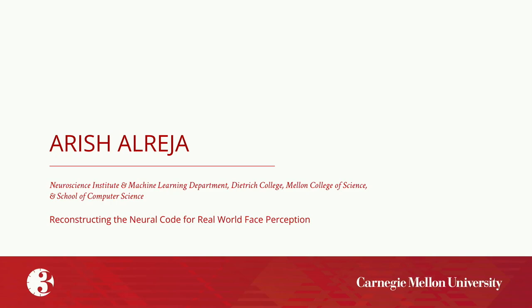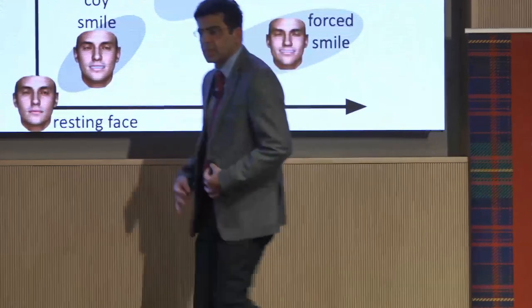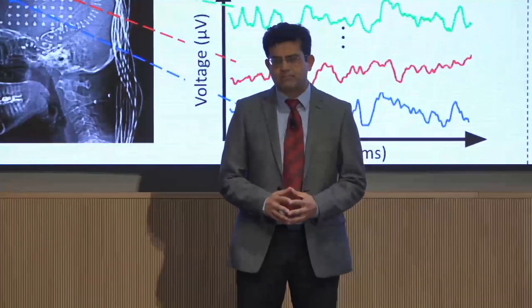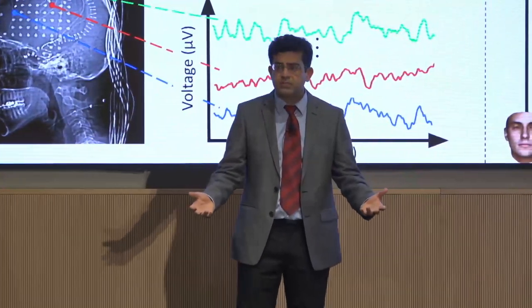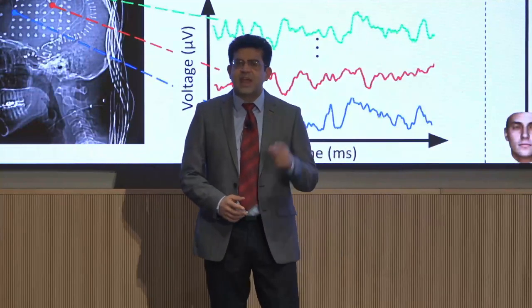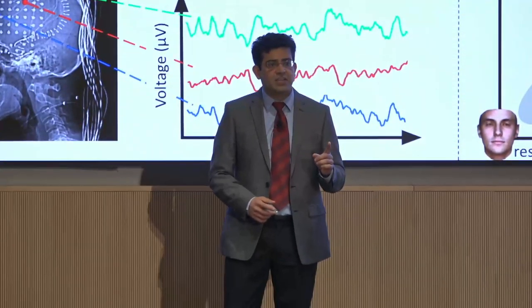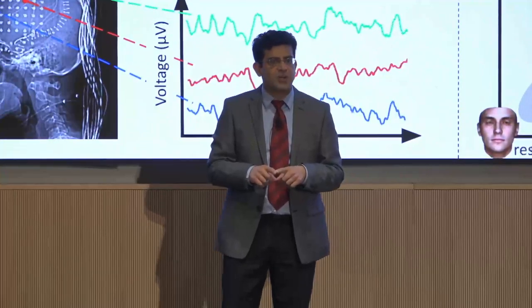Our third presenter is Arish El-Rejah, whose presentation is titled, Reconstructing the Neural Code for Real-World Face Perception. Imagine a game of snakes and ladders with your daughter. How does your brain code for her changing facial expressions as that game unfolds? Would it surprise you that everything we know about face processing comes from lab experiments that recorded brain activity while participants looked at images of random faces on a screen?